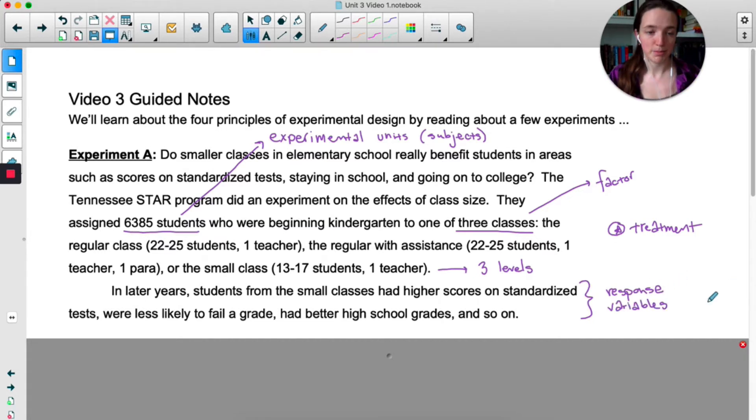The last piece of vocab that I'll mention is a response variable. That's the thing that you are measuring. In this case, it looks like it's a very long-term study. In later years, the scientists look at standardized test scores, whether or not they've failed, who had better high school grades. Those are all response variables. It's what you're measuring in response to the different treatments that you imposed.